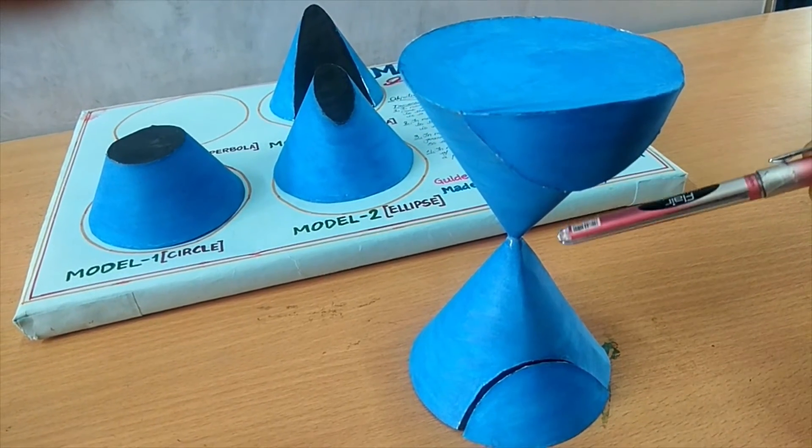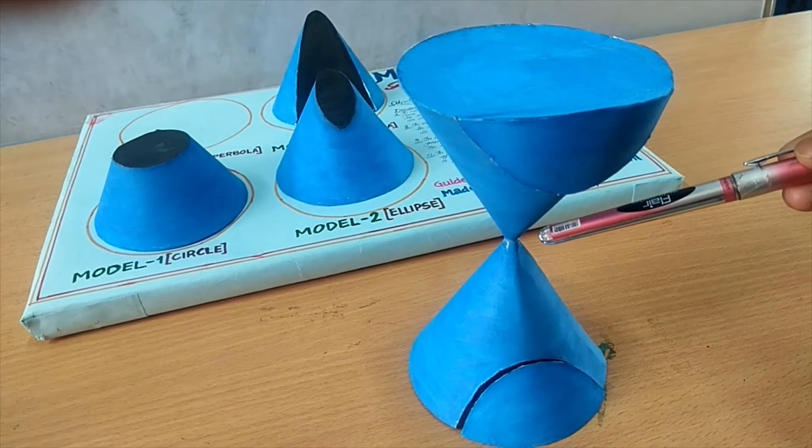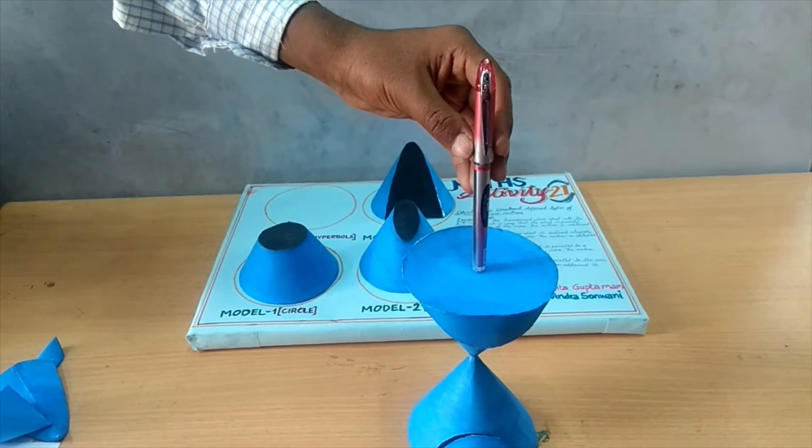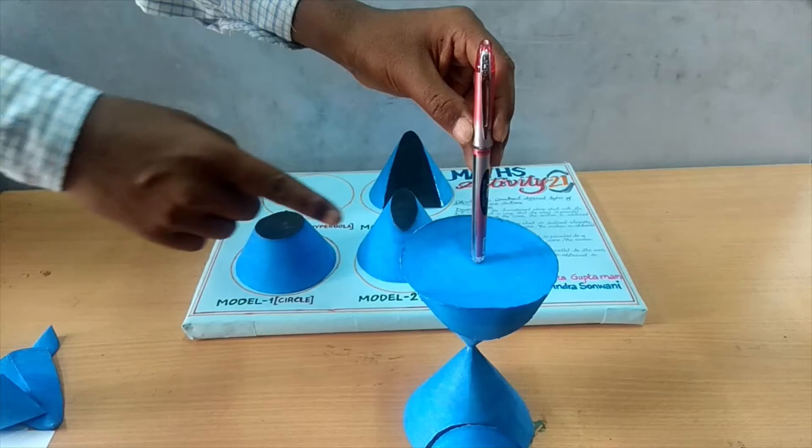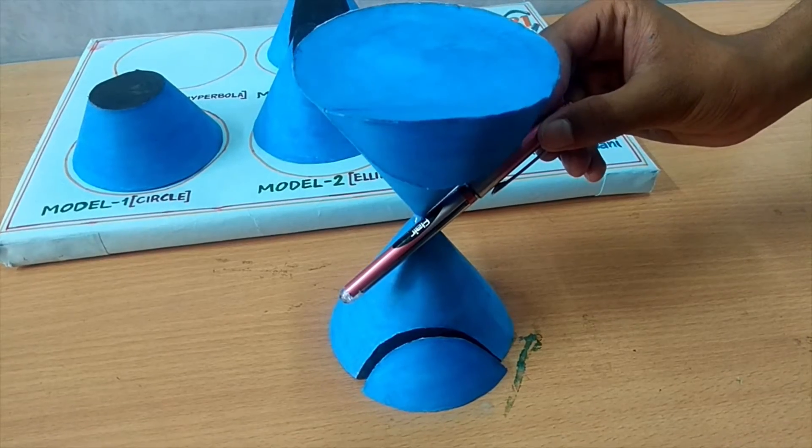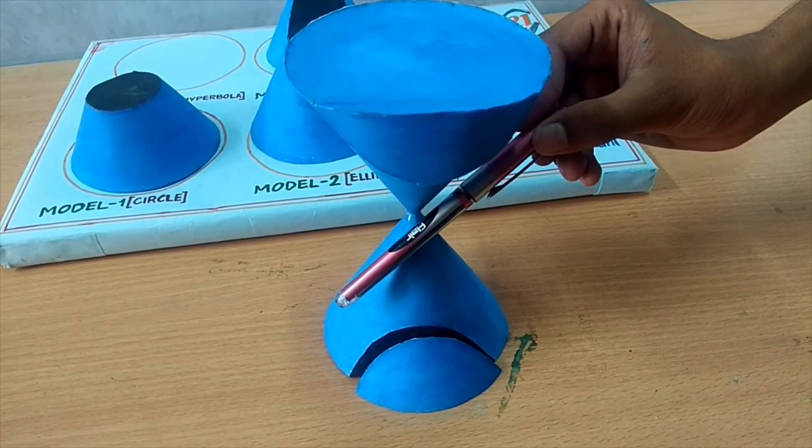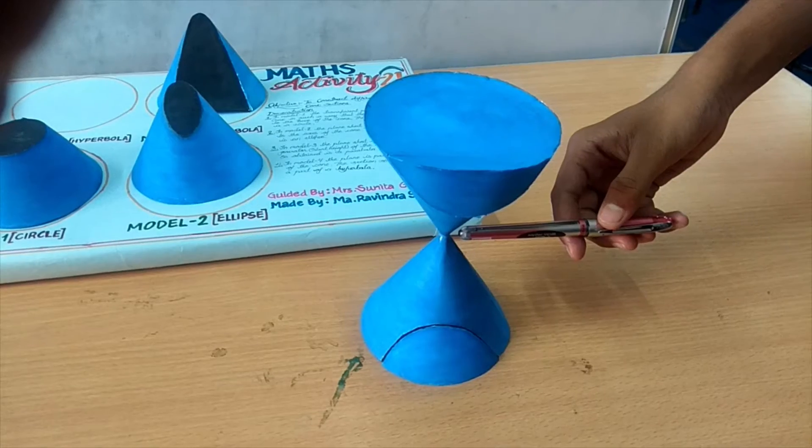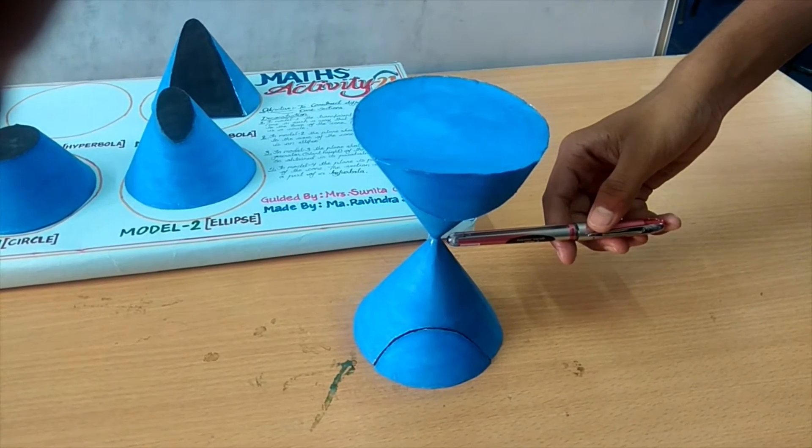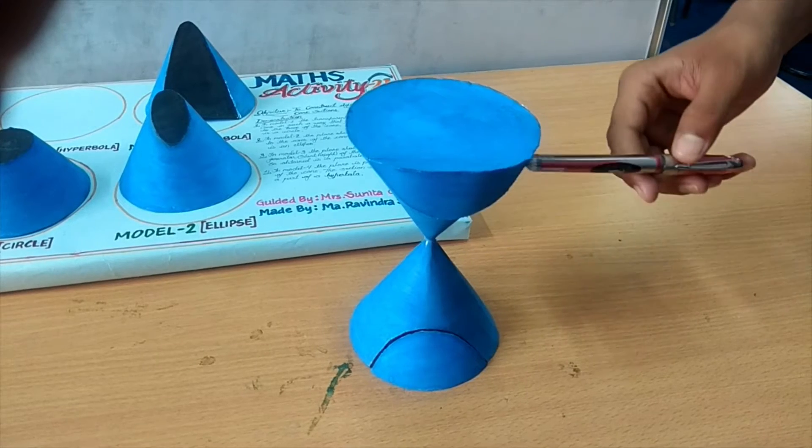We can see in this model, the point B is called a vertex. The line L is the axis of the cone. The rotating line M is called a generator of the cone. The vertex separates the cone into two parts called naps: upward nap and downward nap.